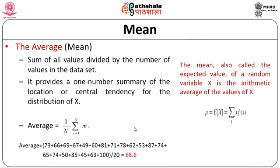The second type of metric is mean. Mean is fundamentally the average. We can take a set of data, sum all the values, and divide by the total number of values in the given data set. This generates the average. It provides a one-number summary about the location or central tendency for the distribution of the variable x, helping us identify where exactly the data tends to average. The equation for computing the mean is the sum of values divided by n, where n is the total number of values.